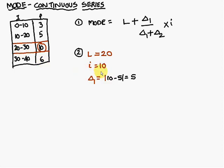Next, Δ₁. How do we calculate Δ₁? Take the highest frequency, which is 10, minus the preceding frequency. The preceding frequency is 5, so 10 - 5 = 5. This value is always considered positive.